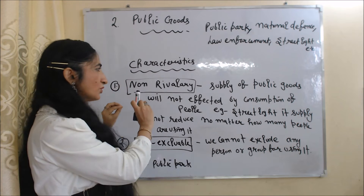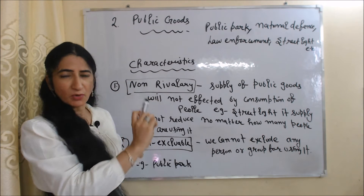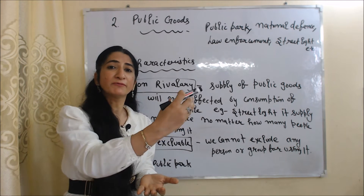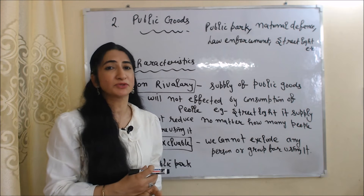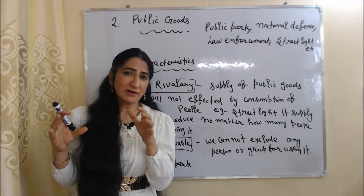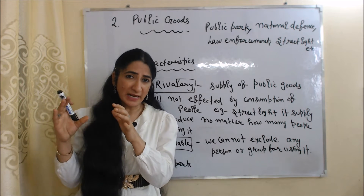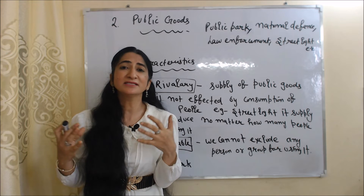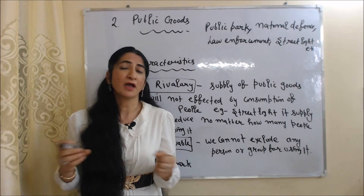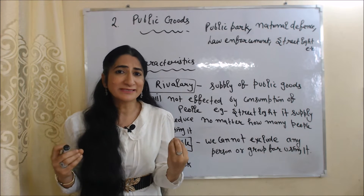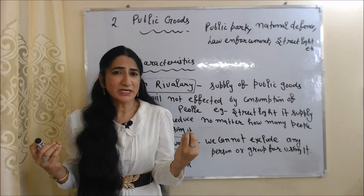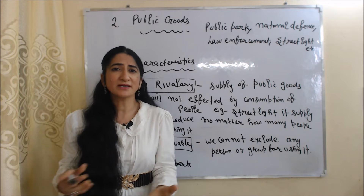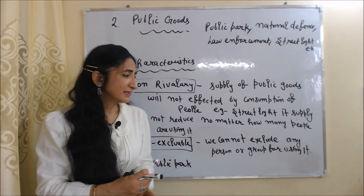Non-rivalry means the supply of public goods will not be affected by the consumption of people. For example, with street lights, the supply will not reduce no matter how many people are using them.